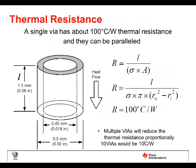Thermal resistance of vias. Here we've got a via with a length L, which is a 60 mil board, and an 18 mil via. Plug in the numbers and it comes out to be 100 degrees C per watt. So if your device is putting out one watt and you have one via with all the heat going through it, that's 100 degrees C rise — not good enough. So you put multiple vias in; one of our examples shows 16 vias, and you can divide that down. You can easily cut it in half by just reducing the thickness of the board by half. Keep your board at minimum thickness — this helps you also electrically on your loop areas.